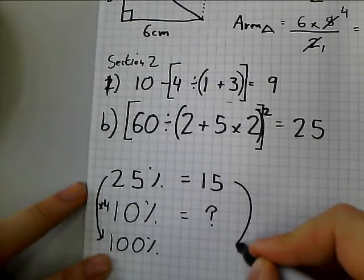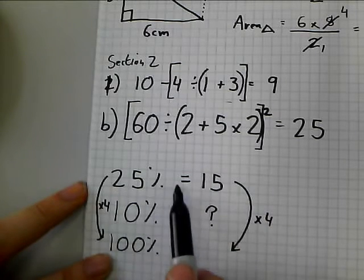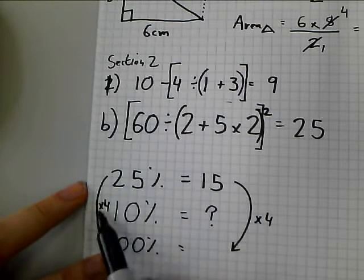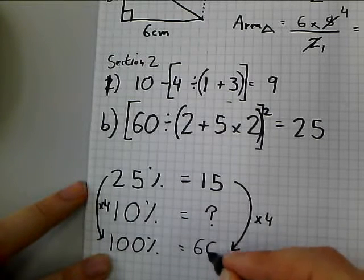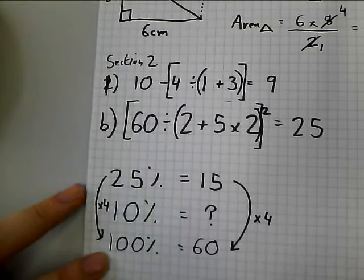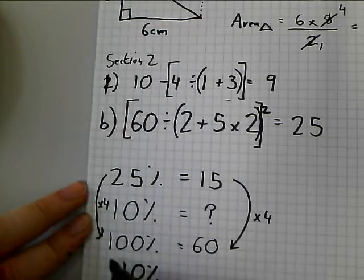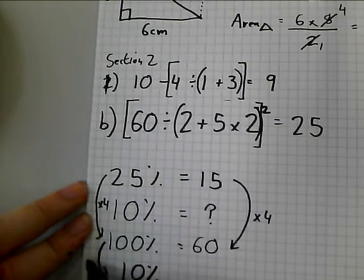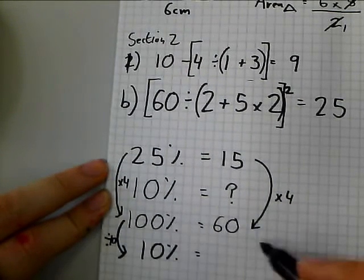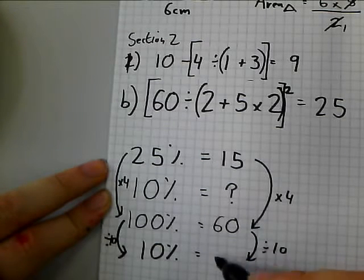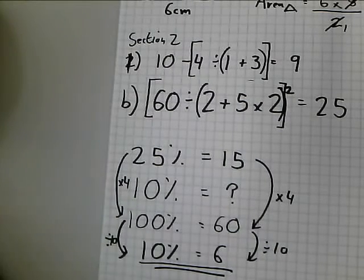So, I'm going to do the same to the 15. So, if 25% equals 15, if I multiply 25% by 4, I get 100%. So, 15 times by 4 gives me 60. I then want to go from 100% to 10%. That's nice and simple because I know to go from 100% to 10%, I divide by 10. So, divide this by 10 and I'm going to get 6. And that is my final answer.